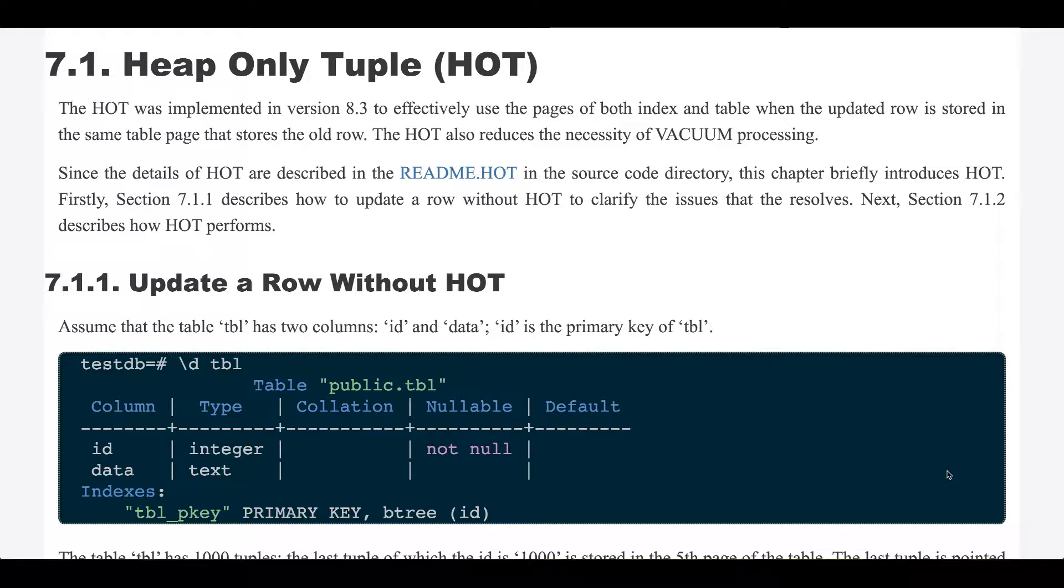Section 7.1: Heap-only tuple (HOT). The heap-only tuple was implemented in version 8.3 to effectively use the pages of both index and table when the updated row is stored in the same table page that stores the old row. The heap-only tuple also reduces the necessity of vacuum processing.